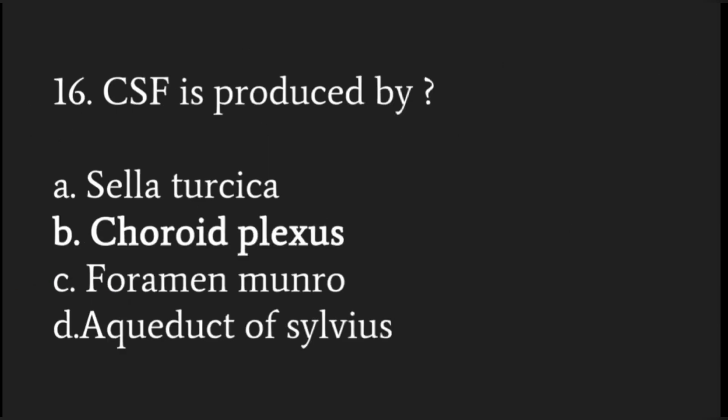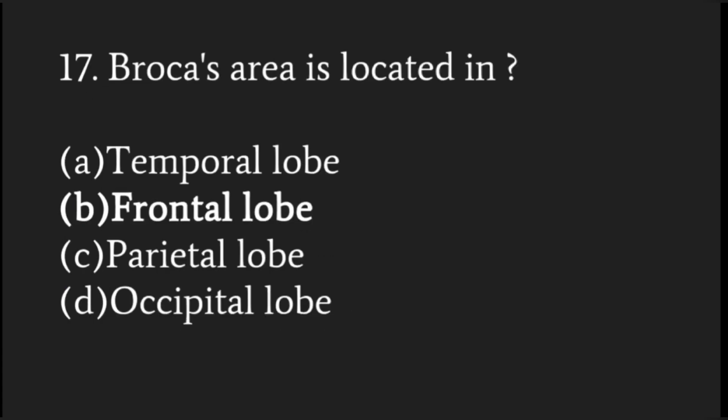CSF is produced by the choroid plexus. Broca's area is located in the frontal lobe and is the center meant for speech.